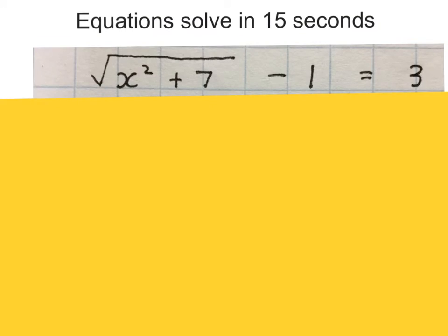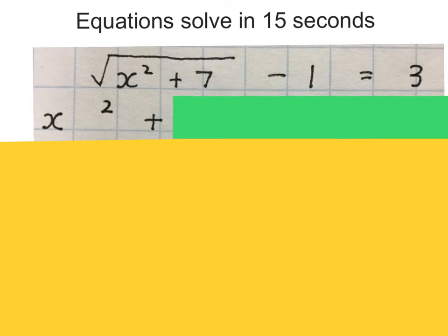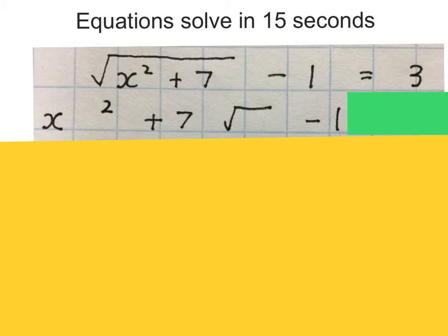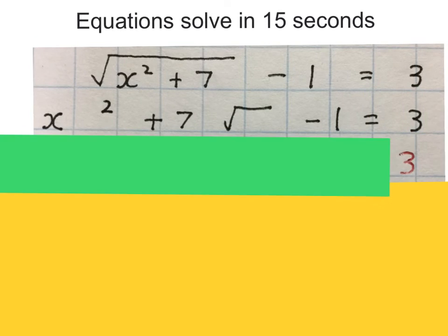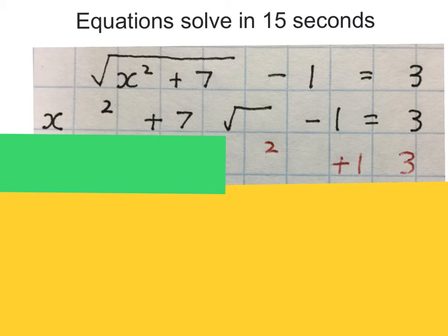Here is the last equation of this video. We're going to solve for x by moving this stuff away from x, furthest first. How this was put together: we took x, squared it, plus 7, square rooted all of it, then minus 1, and got 3. Going backwards: take the 3, plus 1 (gives 4), square that 4 (gives 16), minus 7 (gives 9), then square root 9, which gives 3. So x equals 3.